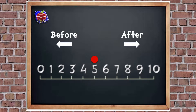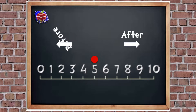You can use the arrows to help you if you're not sure. Find number two and then see which way the arrow points from number five. Is it before or is it after? Yeah, it's before. Good job, well done.